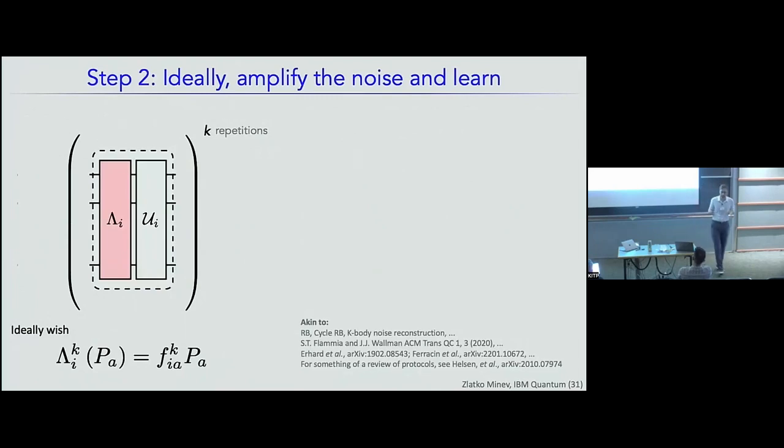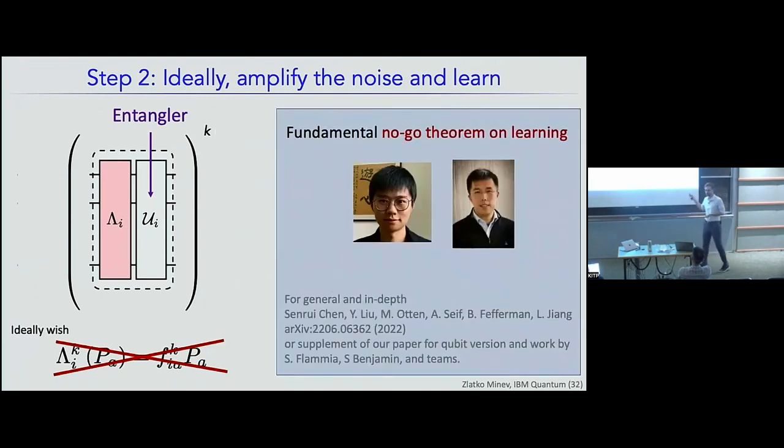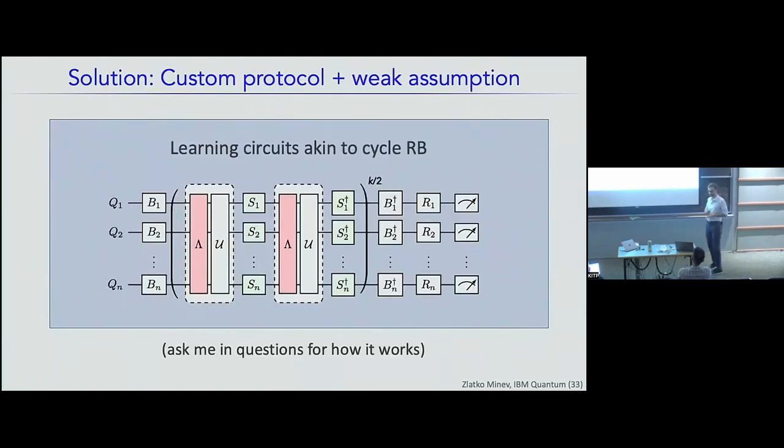In step two, ideally, what you want to do is leverage a lot of our knowledge on amplification and characterization of noise that we have so far akin to randomized benchmarking, cycle RB, and so on. So ideally, you take this noisy channel and repeat it many times. I think John also mentioned the Steve Flammia work and you could just amplify the fidelity by repeating the circuit K times. And I'd love to be able to do this. Unfortunately, when you have an entangling gate, this no longer works directly. And this is a very beautiful paper from Liang Zhang, Sen Rui, and team that shows that there's a fundamental no-go theorem on learning here because of the entanglement of this gate. So there's a lot of subtlety and beauty that goes into this.